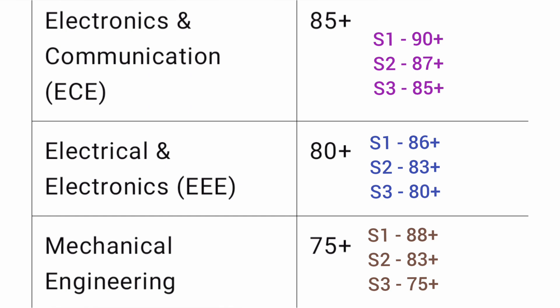For ECE and all electronics specialization branches including Electronics and Computer, with slab 1 you need 90 percentile plus, slab 2 requires 87 percentile plus, and slab 3 requires 85 percentile — though slab 3 can even go down to 80 percentile depending on the specialization. For EEE (Electrical and Electronics Engineering) and its specialization branches: slab 1 needs 86 percentile, slab 2 needs 83 percentile plus, and slab 3 needs 80 percentile, which can go as low as 75 depending on demand.